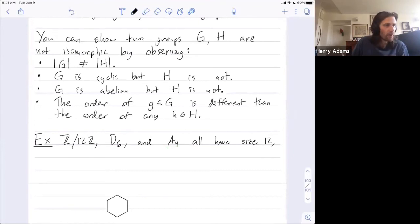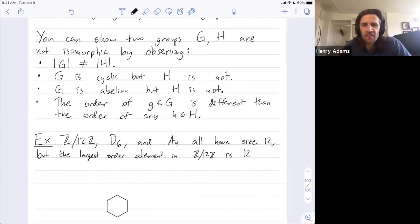So they all have size 12, but the largest order element in Z mod 12 is 12. You have to add one to itself 12 times to get back to zero. And the largest order element in D6 is six. The rotation by one-sixth of the way around, that's an element that has order six. All of the rotations have order at most six, and then the flips all have order two, because if you do any flip twice you just get back to where it started.